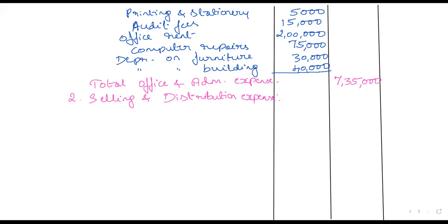Moving ahead with selling and distribution expenses. We are having advertising, bad debts, traveling, commission, and one depreciation — five expenses in total. The amount of advertising is 2,50,000.